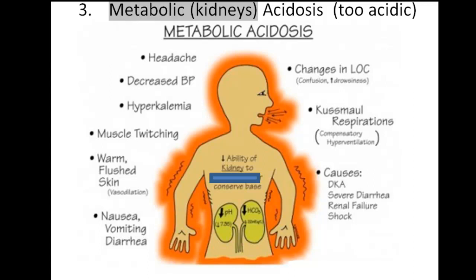The third abnormal condition is metabolic acidosis. This is where the kidneys cause a drop in the bicarbonate ion. If there's a drop in the base, the bicarbonate ion, there will be an increase in the hydrogen ion concentration, creating an acidic environment, therefore pH will drop.